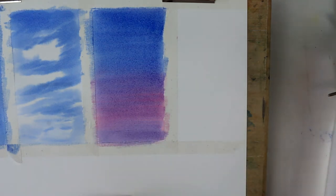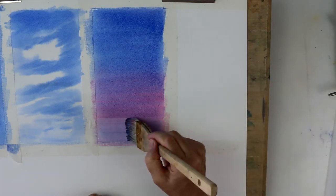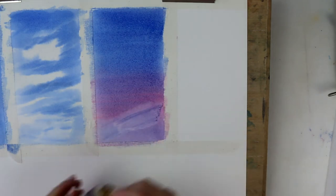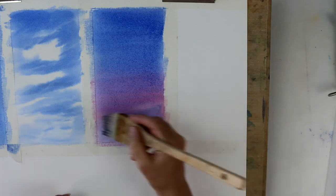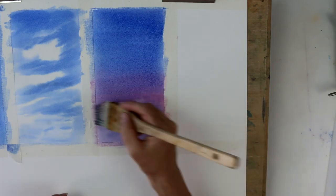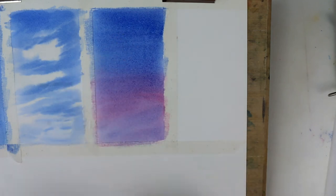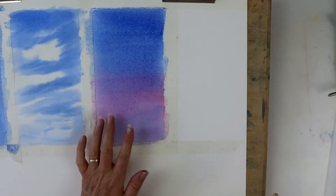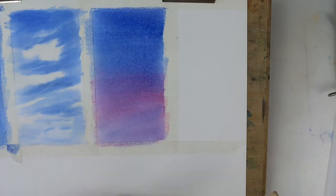I started at the top because that's where you want the darkest color. If I started in the middle, I'd have a dark stripe there. So I start at the top where I want the dark color and come down, then come right over my crimson, blending the two together. Now look at that lovely transparency because there is only one layer of paint there.